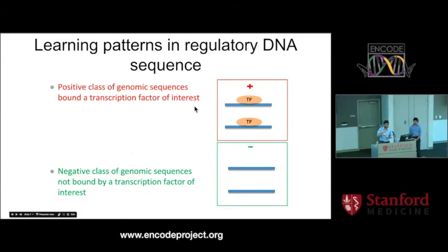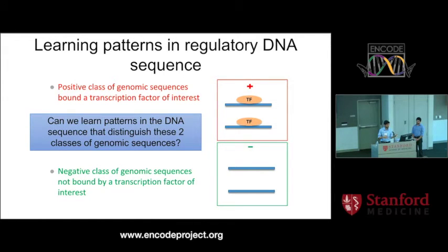To give you one example where this is relevant, as you know, ENCODE generates a ton of ChIP-seq data, transcription factor ChIP-seq data. You can think of taking any particular ChIP-seq dataset, and you get two types of sequences out of it. You get a bunch of sequences that are bound by the TF. That's the positive class of genomic sequences bound by your TF of interest. And then the rest of the genome is your negative class. Your main goal is to try to take these two classes of sequences and really understand what patterns exist in the DNA sequence to distinguish these two classes.